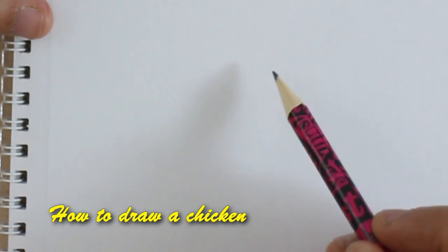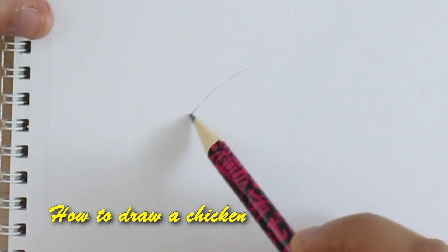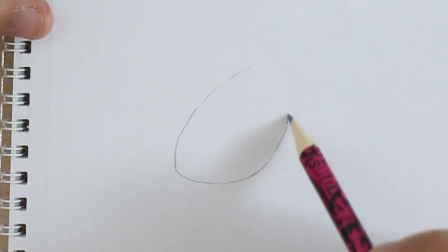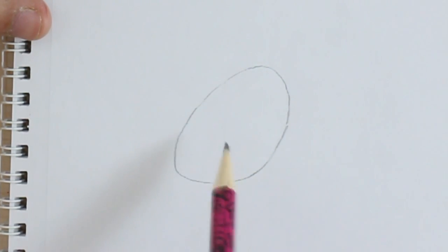Welcome to drawingisimple.com. Today we will learn how to draw a chicken. I will start by making an oval and I'm going to overlap the oval on the other side.